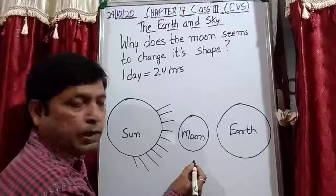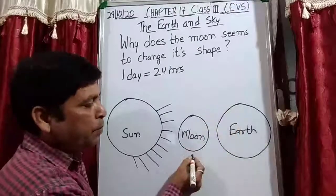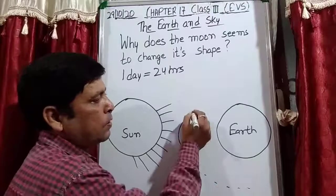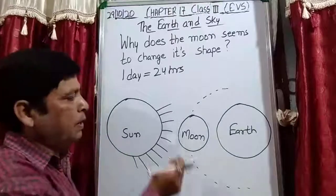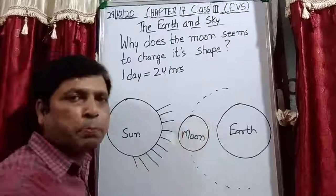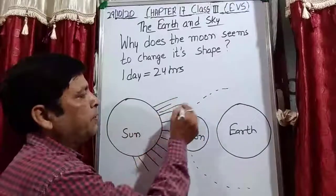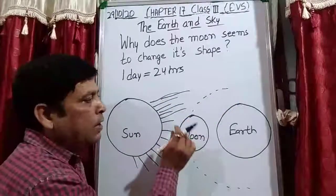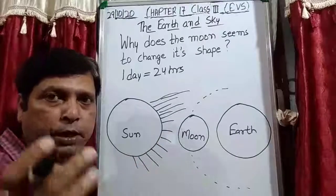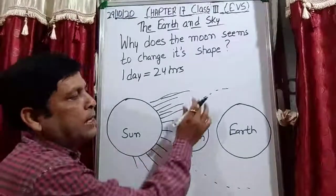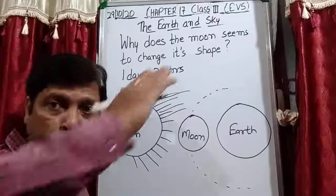But as the Moon is moving around the Earth — it is revolving around the Earth — its position and angle keep changing. When you shine a torch, the front portion gets light and the back portion does not. Similarly, as the Moon keeps moving, it does not always get the full light of the Sun. That is the reason we see different shapes of the Moon. Because the Moon is also in movement around the Earth, at one point you see a full moon, and then as it moves, you see different phases.